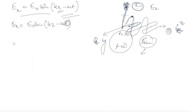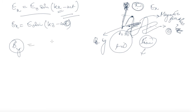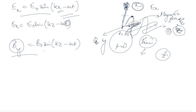Now, for the magnetic field: if this is a magnetic field, then the position will be determined by B_y — the y-coordinate or y-plane. The position of y will depend upon z and the time t, and this is equal to B₀ sine of (kz − ωt). So y is also given as B₀ sine(kz − ωt), traveling in the same direction. This is the magnetic field, and the electric field is shown separately here.